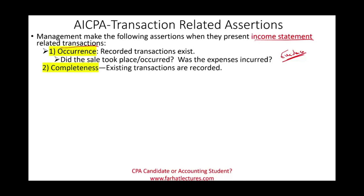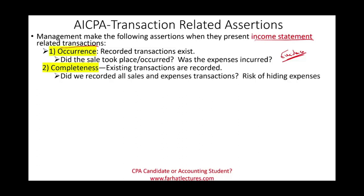Completeness: what are they asserting? They're asserting that all sales and all expenses have been accounted for and recorded. Did we record all sales and expenses? The risk is the possibility of hiding some expenses or some revenues. Did we account for everything? They're saying they did, because that's the implicit claim they make — that's the assertion. Our job is to collect evidence to test that claim.